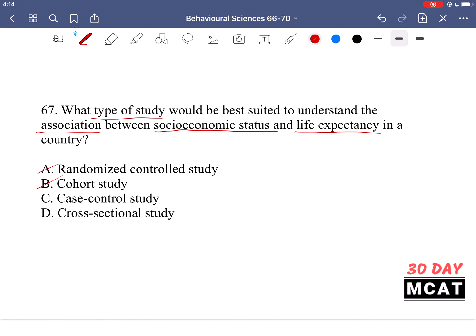Option C, a case control study. So this is when you look at some particular case. For example, someone might have a low health or low life expectancy, and then you compare that to someone who has a high life expectancy. And then, so you have two groups, right? You have the group you're looking at, you have a control, and then you're retroactively or retrospectively going back and looking at what characteristics the group had or what socioeconomic status they had.